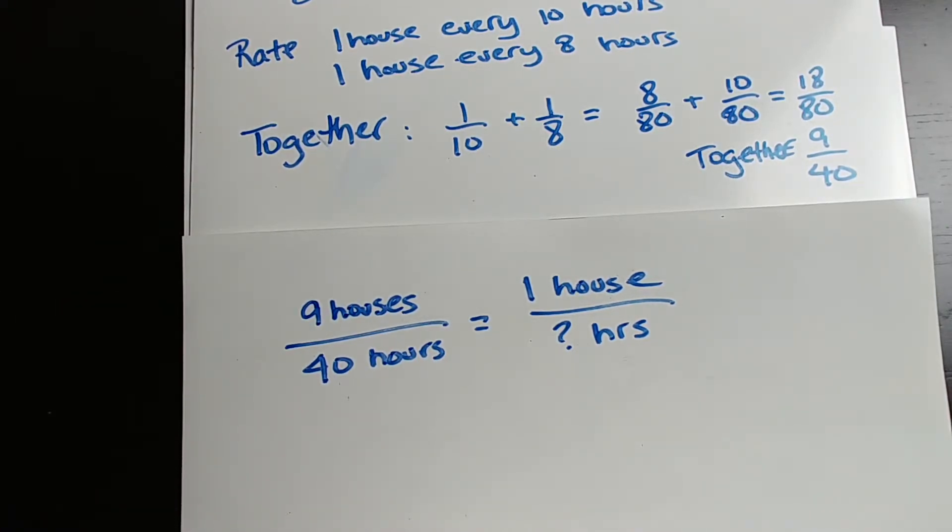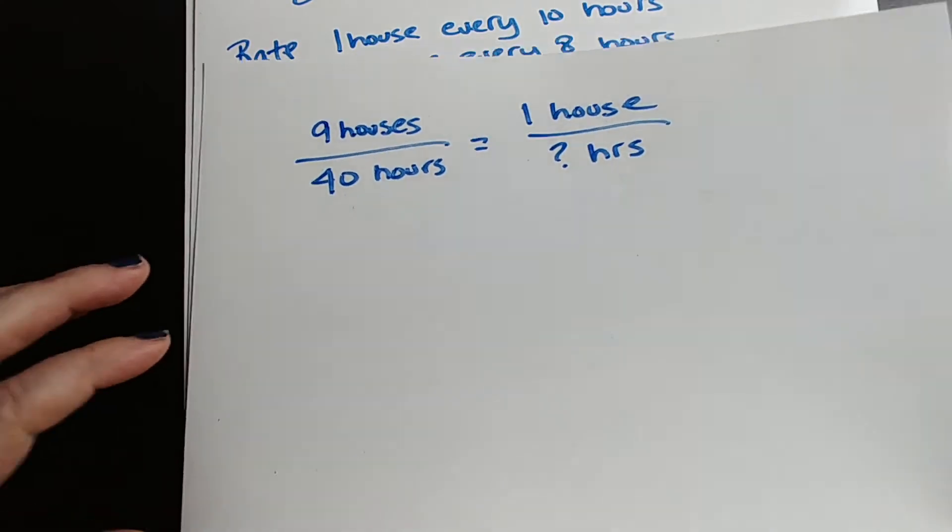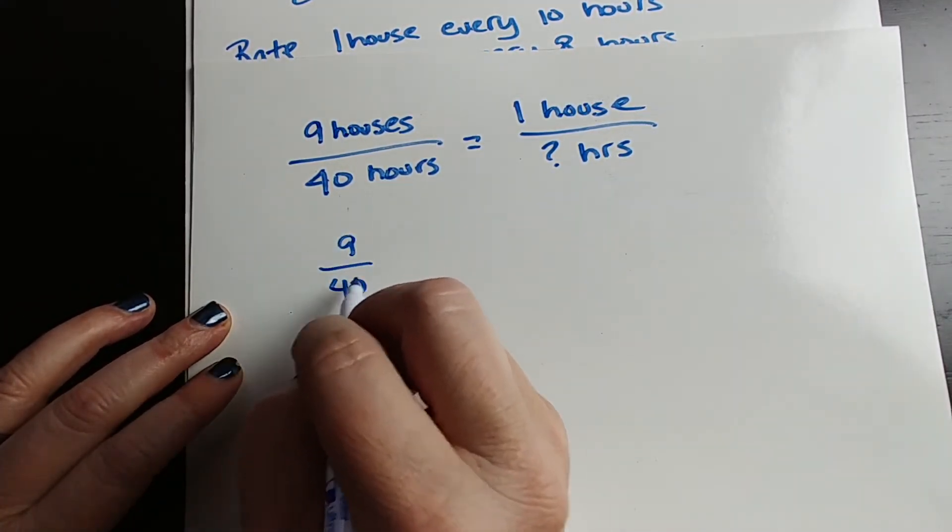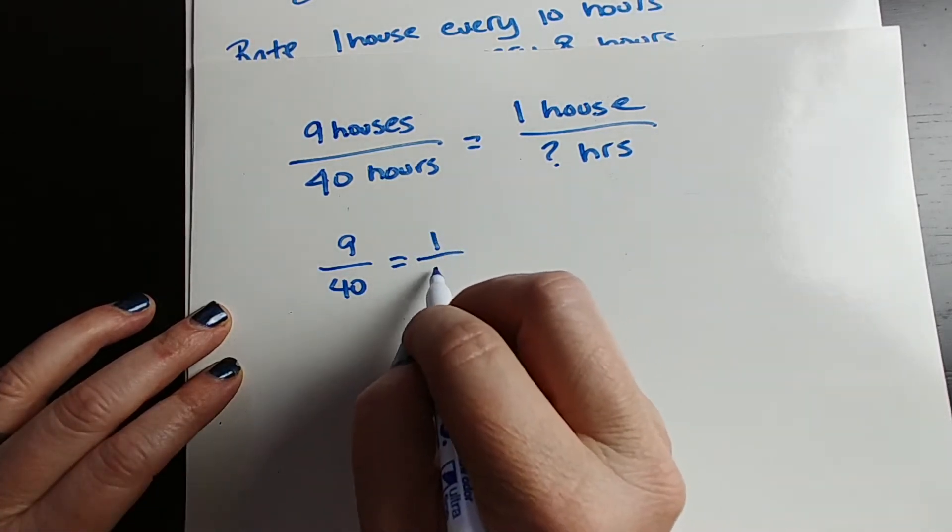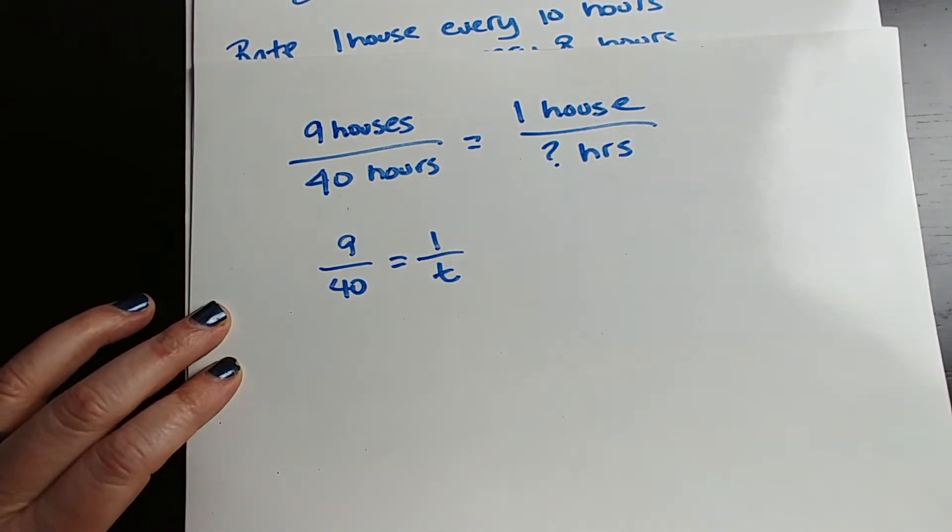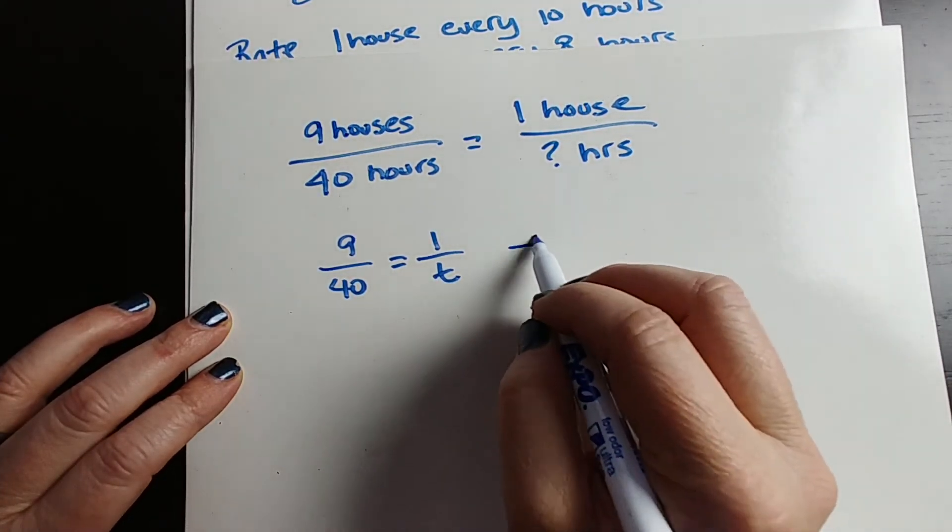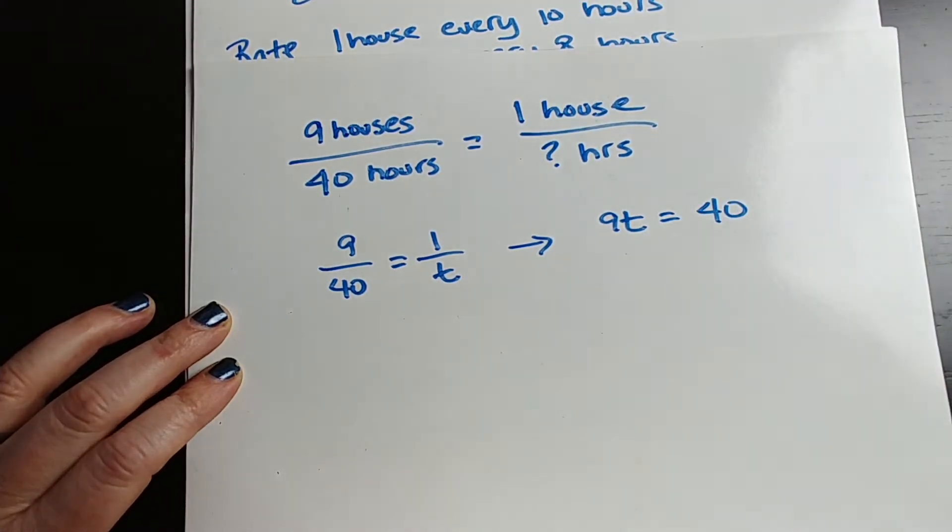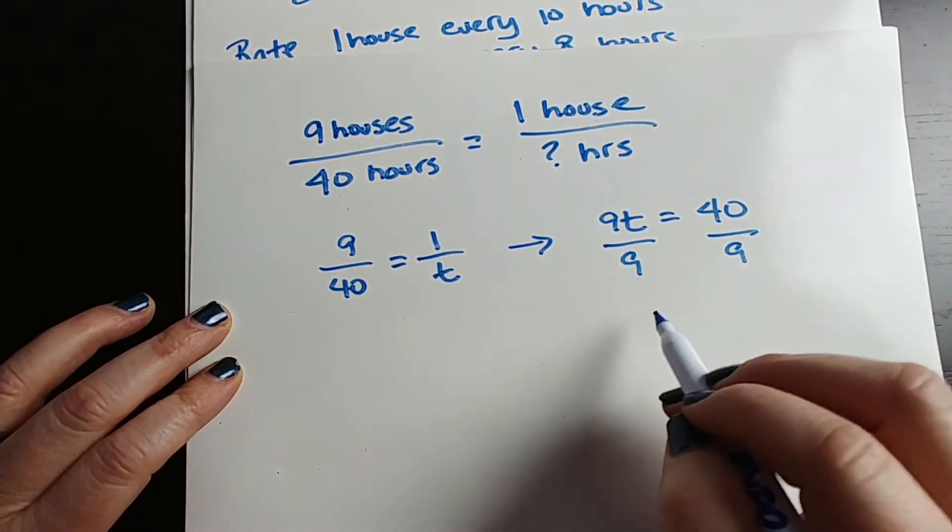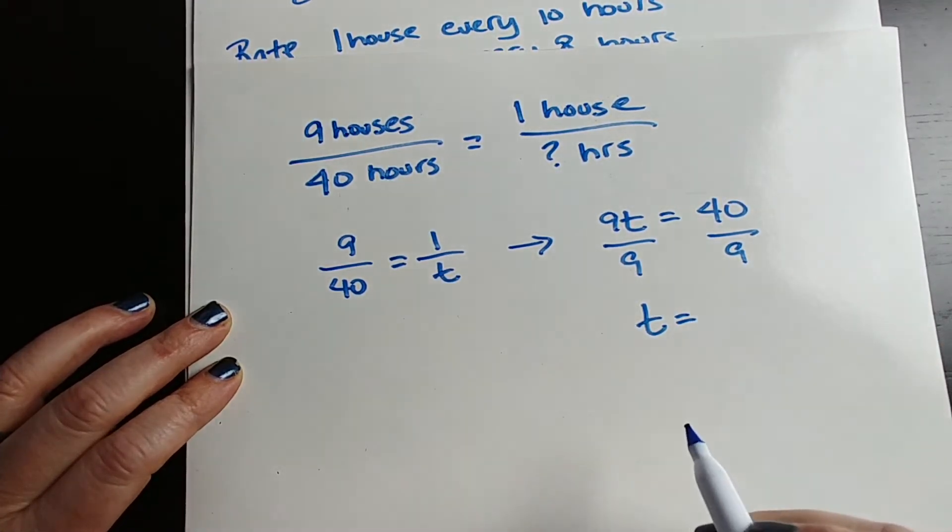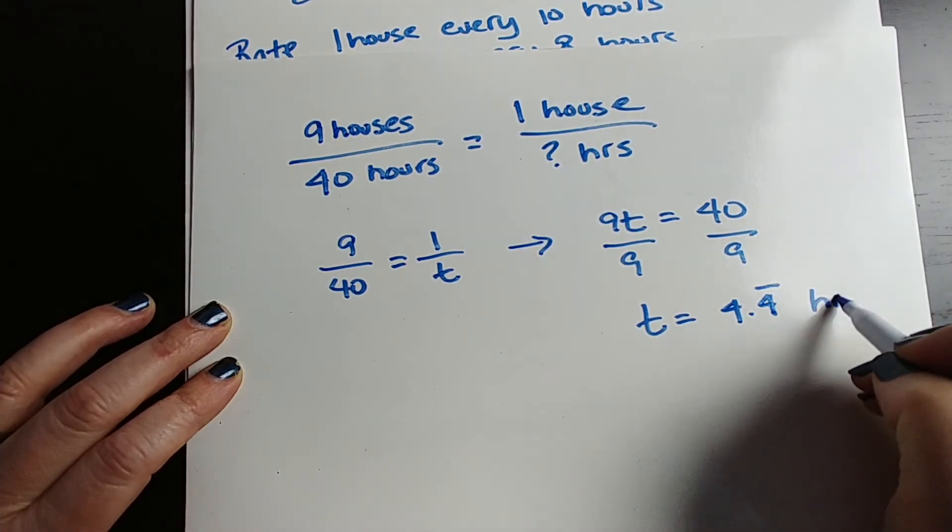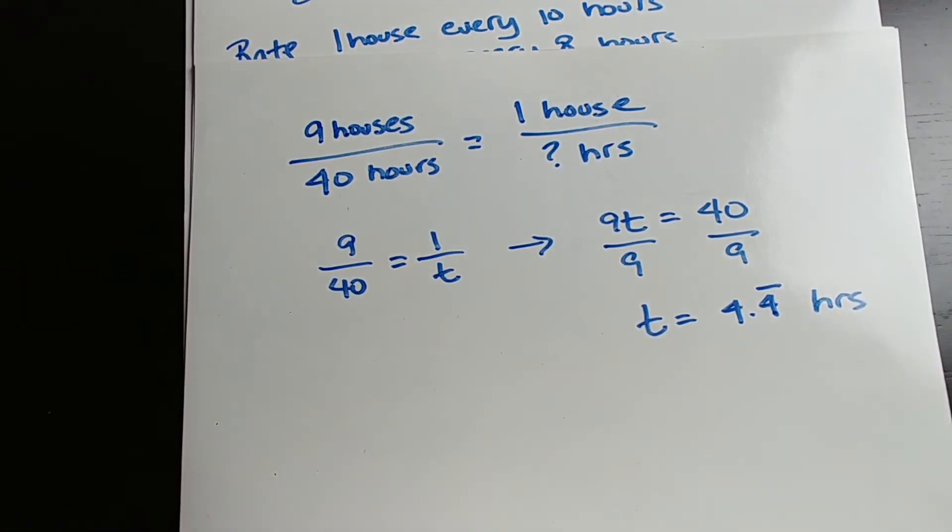Once we get their together rate of 9 40ths, we make a proportion by setting it equal to 1 over a variable. So we're going to say 9 over 40 equals 1 over t. Usually they make you do t for time. You can cross multiply to solve a proportion fairly easily. So this turns into 9t equals 40. We're going to divide by 9, divide by 9, t equals, or it's actually a repeating decimal so 4.4 repeating hours. There you go. That's how long it would take them together.